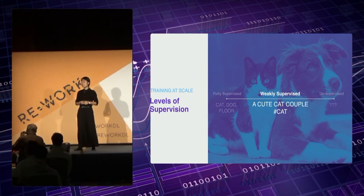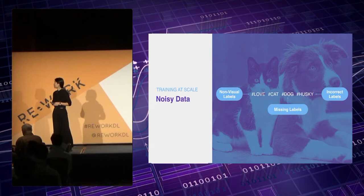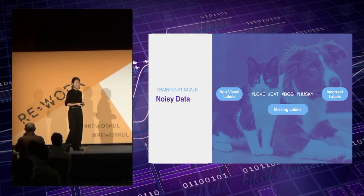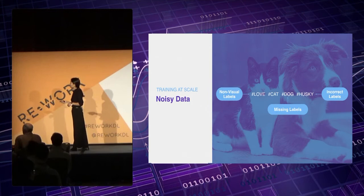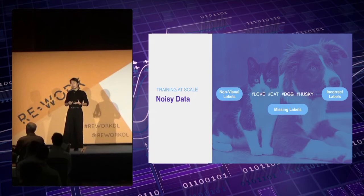Does that mean the problem is solved? Obviously not, because this data comes with a lot of noise. For example, there are hashtags used to reference non-visual labels, such as hashtag love for a photo of a cat and a dog. And if you're an active Instagram user, you've probably heard of hashtag TBT for Throwback Thursday. In addition, a user rarely tags an image with all associated concepts, so our data has a missing label problem. And sometimes the user may just provide the wrong label. All this noise adds up, which can really confuse deep learning models and poses a very unique research challenge.